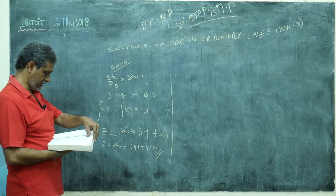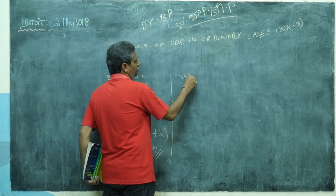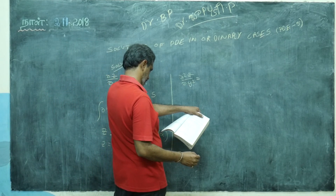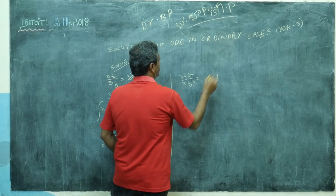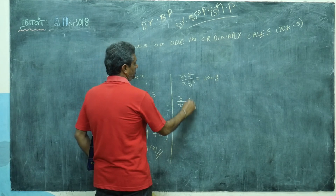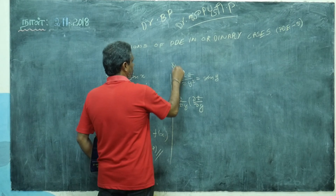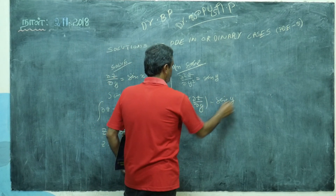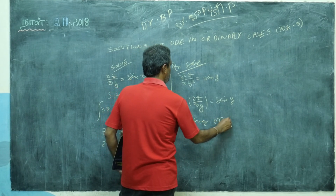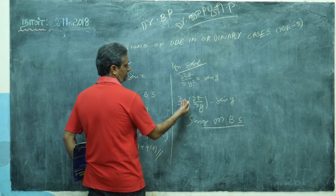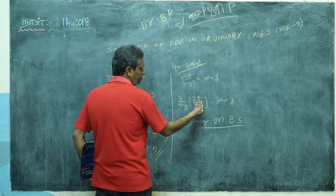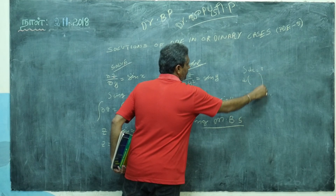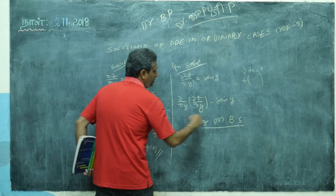They may also give: Solve ∂²z/∂y² = sin y. I write this as ∂/∂y(∂z/∂y) = sin y. Integrating on both sides with respect to y — the integral of sin y with respect to y gives minus cos y, so ∂z/∂y = −cos y + f(x).